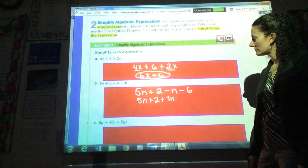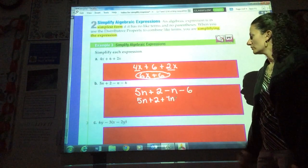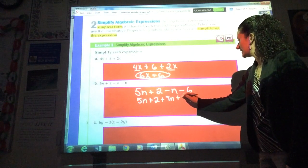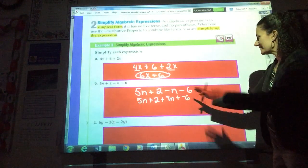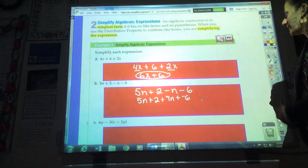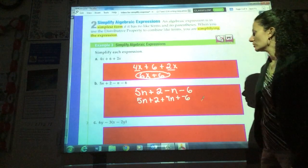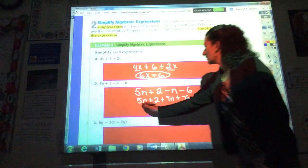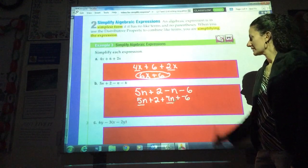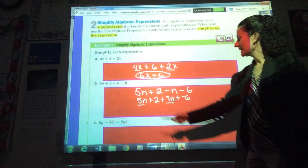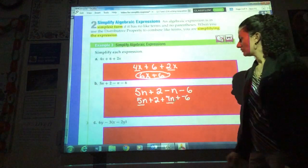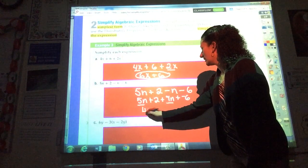Remember, if there's no number in front of the variable, it does have a coefficient of 1, or in this case negative 1, and plus negative 6. By doing this, it's just going to help me avoid little silly errors later. Now I'm going to do what I did in the first one. I'm going to look for like terms. 5n and 1n are like terms because they have the same variable. Now that's a negative 1n. So I can add the coefficients 5 plus negative 1. 5 plus negative 1 is 4n.